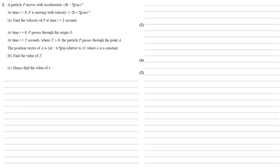Particle p moves with acceleration 4i minus 5j meters per second squared. At time t equals zero, p is moving with velocity minus 2i plus 2j meters per second. For part a, we need to find the velocity of p at time t equals two seconds.